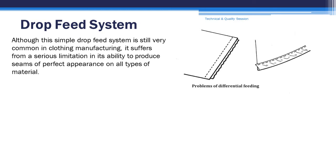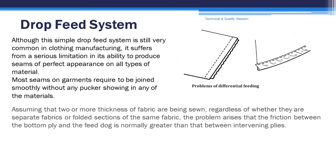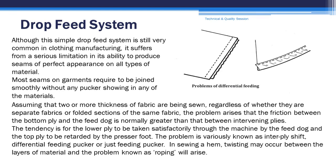Although this simple drop feed system is still very common in clothing manufacturing, it suffers from a serious limitation in its ability to produce seams of perfect appearance on all types of material. Most seams on garments are required to be joined smoothly without any pucker showing in any of the materials. Assuming that two or more thicknesses of fabric are sewn together, the problem arises that the friction between the bottom ply and the feed dog is normally greater than that between the top plies. The tendency is for the lower ply to be fed satisfactorily through the machine by the feed dog and the top ply to be retarded by the presser foot. This problem is variously known as inter-ply shift, differential feeding pucker, or just feeding pucker. In sewing a hem, twisting may occur between the layers of material and the problem known as roping will arise.